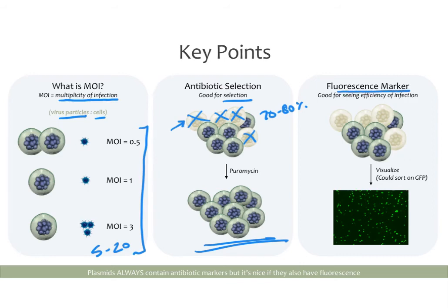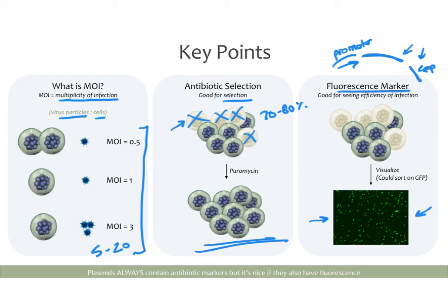Another nice feature is the fluorescence marker. Your promoter drives both your modification and a GFP marker, so if your modification is being expressed, GFP is also expressed. When you infect your cells with your virus, you can look under the microscope to see how much GFP there is, telling you how good your infection was — before you run a full Western blot and qPCR blind. Once you've done one Western and correlated it with fluorescence levels, in the future you can just look at the fluorescence to know whether your infection worked. Plasmids don't always contain fluorescent markers, so order ones that do — ideally matched to what your microscope can detect easily.